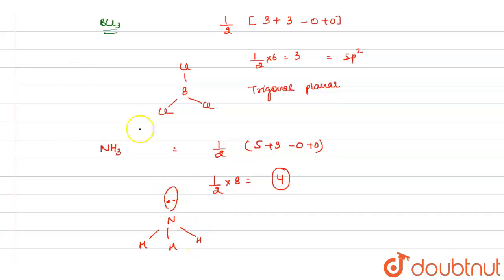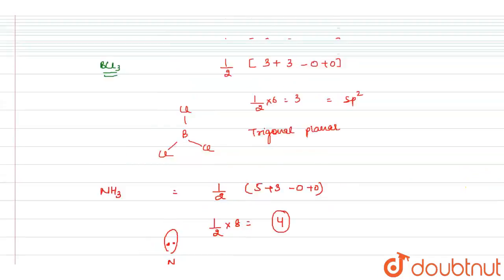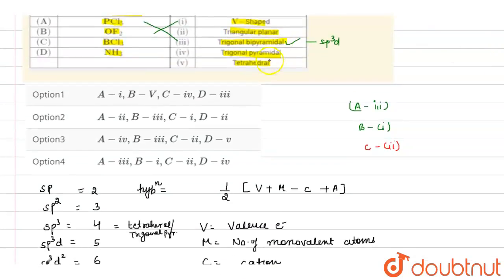And there is one lone pair. And this shape is actually trigonal pyramidal shape.